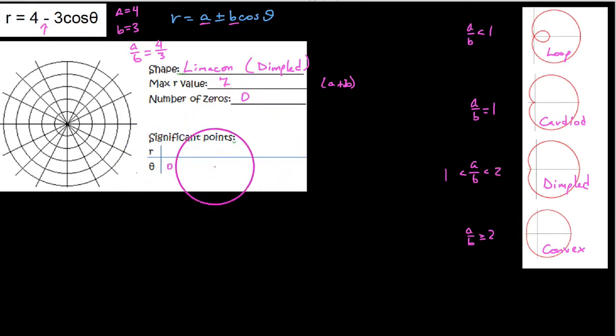So plugging in a battery of values here, recall that the period of all limaçon functions is 2π. So we're going to put in angles from 0 to 2π, and we'll go up by π halves every time. So we say π, 3π halves, 2π.